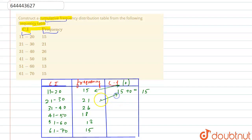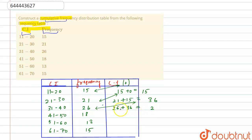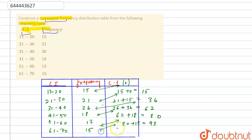For the next interval, the cumulative frequency is 21 plus 15, which equals 36. Then it becomes 26 plus 36, which equals 62. Next, 62 plus 18 equals 80. Then 80 plus 13 equals 93. And finally, 93 plus 15 equals 108.